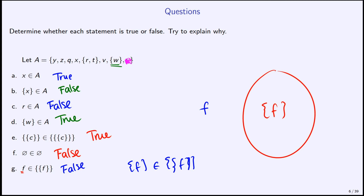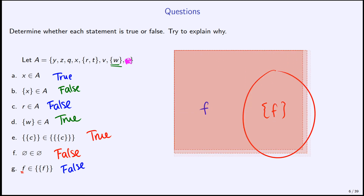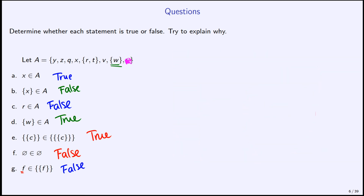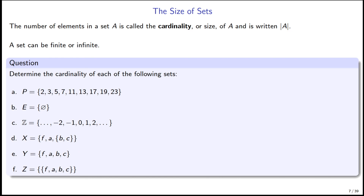At first these questions are not easy, but as you do more practice you get more comfortable. The size of a set has a specific name — it's called the cardinality. This tells us how many distinct elements are in the set. To denote the cardinality of set A, we put little bars beside it — like absolute value bars from high school math. A set can have a finite number of elements or an infinite number of elements.